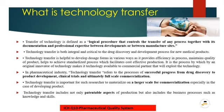What is the definition of technology transfer? It is a logical procedure that controls the transfer of any process together with its documentation and professional expertise between development — that is the owner organization where the technology has been developed — and the manufacturing site. If somebody has developed the formula in one organization, we can transfer the same technology to the organization where the manufacturing plant is located. That is what we call horizontal and vertical transfer, which we will discuss in detail in upcoming slides.